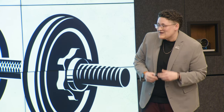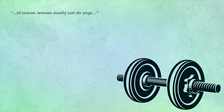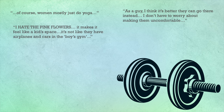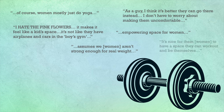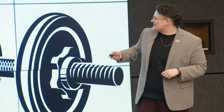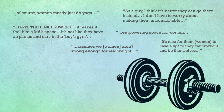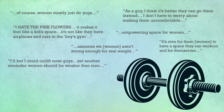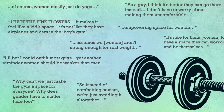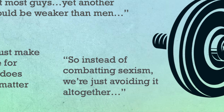Photos also had captions, so here are some snippets of different student perspectives. Pay attention to words like I, we, and them. 'As a guy, I think it's better they can go there instead — I don't have to worry about making them uncomfortable.' 'I hate the pink flowers with much enthusiasm — it makes it feel like a kid's space. It's not like they have airplanes and cars in the boys' gym.' 'It's nice for them — referencing women — to have a space they can work out and be themselves.' And: 'Instead of tackling or combating sexism, we're just avoiding it altogether' — which was a really compelling point made by a student.